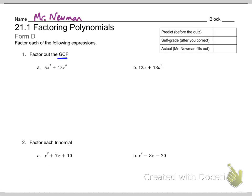First off, you'll notice that we need to factor out the GCF on these first two problems. So I'm just going to tell you that the GCF here is 5x³ because 5 goes into 5 and 15, and x³ goes into x³ and x⁴. When we divide that out, we get 1 plus 3x.